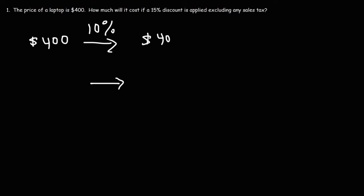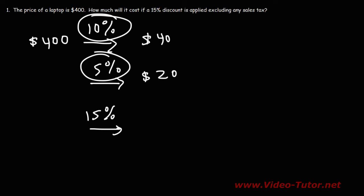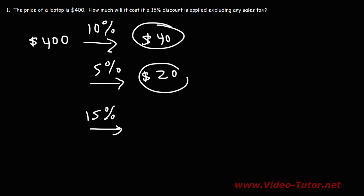Now, if 10% of $400 is $40, what's 5%? Well, 5% is half of 10%. So if 10% corresponds to $40, then 5% corresponds to half of that, which is $20. To determine 15% mentally of $400, we simply need to add 10% and 5%, because 10 plus 5 is 15. So if we add $40 and $20, we get 15% of $400, which is $60.